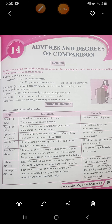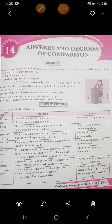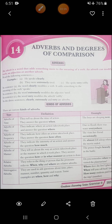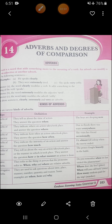The next is adverbs of degree. They indicate the intensity of an action and they answer the question 'how much'. Example: 'He almost fell asleep when the movie entered.' Then adverbs of manner — they tell us the way an action took place. Like: 'The prince fought bravely in the battle.' How did he fight? He fought bravely.